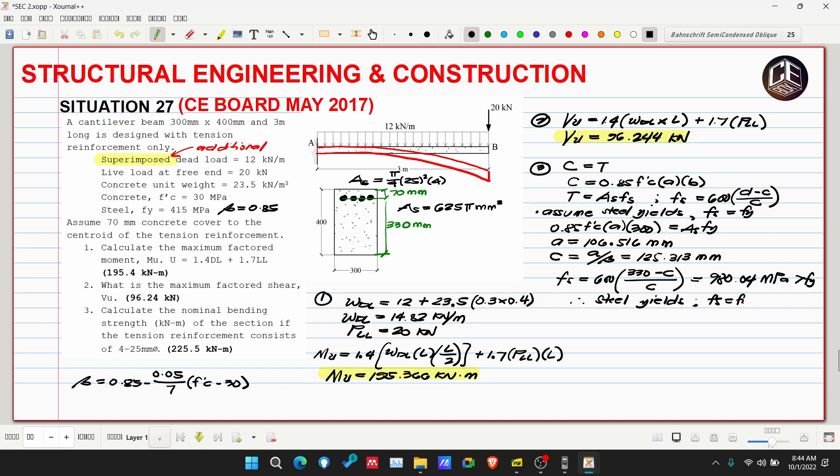There's another way to check if the steel yielded or not, by comparing rho balance to our rho actual. If our rho actual is less than our rho balance, therefore the steel yields. But if our rho actual is greater than rho balance, therefore steel does not yield.